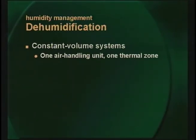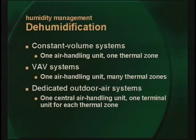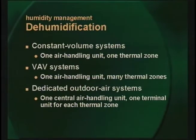The VAV system is also widely used and is often the most forgiving system in terms of dehumidification. This system includes one air handling unit delivering a mixture of outdoor air and return air at varying volume and constant temperature to many thermal zones, with a VAV terminal unit to modulate the airflow to each zone. Finally, the dedicated outdoor air ventilation system is usually applied with local constant volume terminal units such as water source heat pumps or fan coil units. One central air handler preconditions outdoor air for ventilation and delivers it to local units or directly to each thermal zone. Each of these systems deserves a separate broadcast. Today we'll focus on the very common and very troublesome constant volume system.